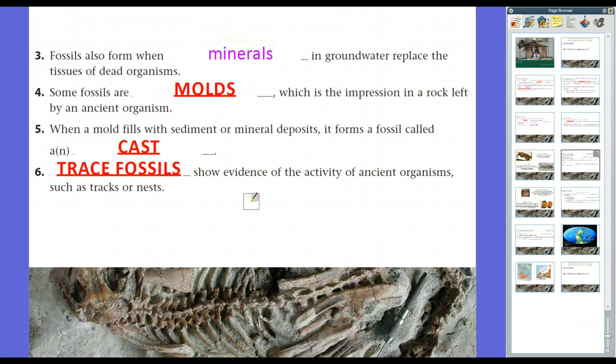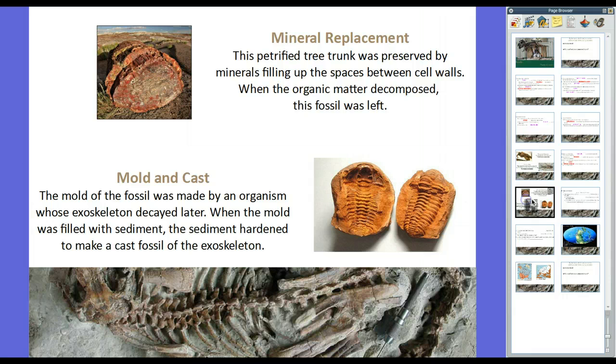And then, in addition, we have trace fossils, which show evidence of the activity of ancient organisms, such as tracks or nests. If you ever go in between Austin and San Antonio, Texas, there's a state park that has dinosaur tracks, where you can go out there. Essentially, dinosaurs walked in the mud, and that mud dried, and it was suddenly covered by another layer of mud. And what ended up happening was, over time, it all solidified into rock. And the rock above the tracks was eroded away, and all that was left were the footprints. And so you can actually go up, and you walk, and you can walk in the footprints of dinosaurs.